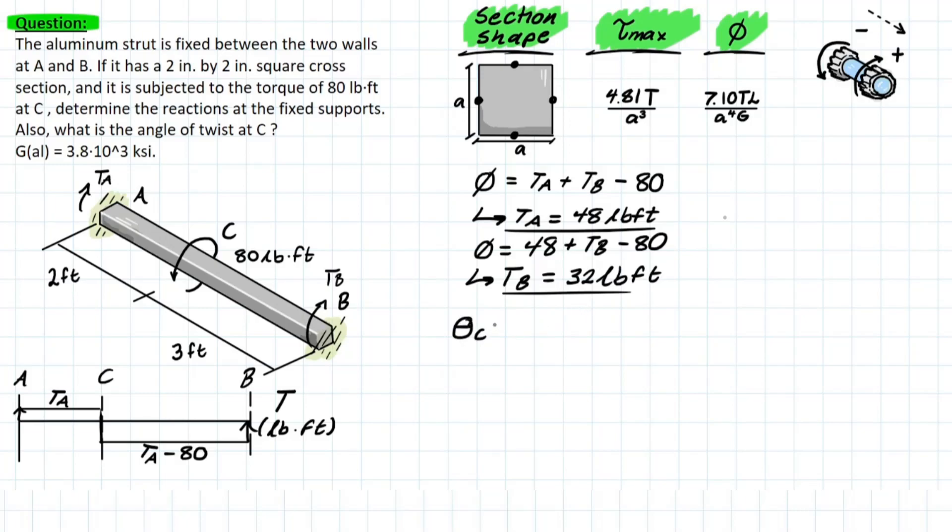Now the last thing you need to do is solve for theta C. You're using the same formula. And you can solve for theta C by going from C with respect to A. And we have 7.1 times the torque, and we've already solved for that, which is 48 pounds-feet. And our cross section is given to us in inches. We're going to have to convert this. And the way to do so is we say we have 12 inches per foot. And similarly, we have that length as well, which is two feet, converting it 12 inches per foot.